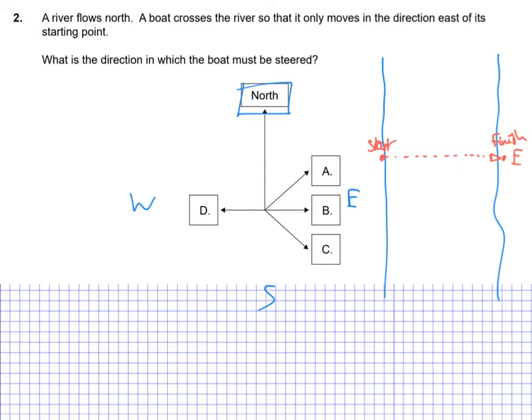This is the resultant of two vectors. And the two vectors we're talking about here are going to be the direction that the boat has to head, in other words, the direction or the vector of the boat through the water, and the vector of the river itself.